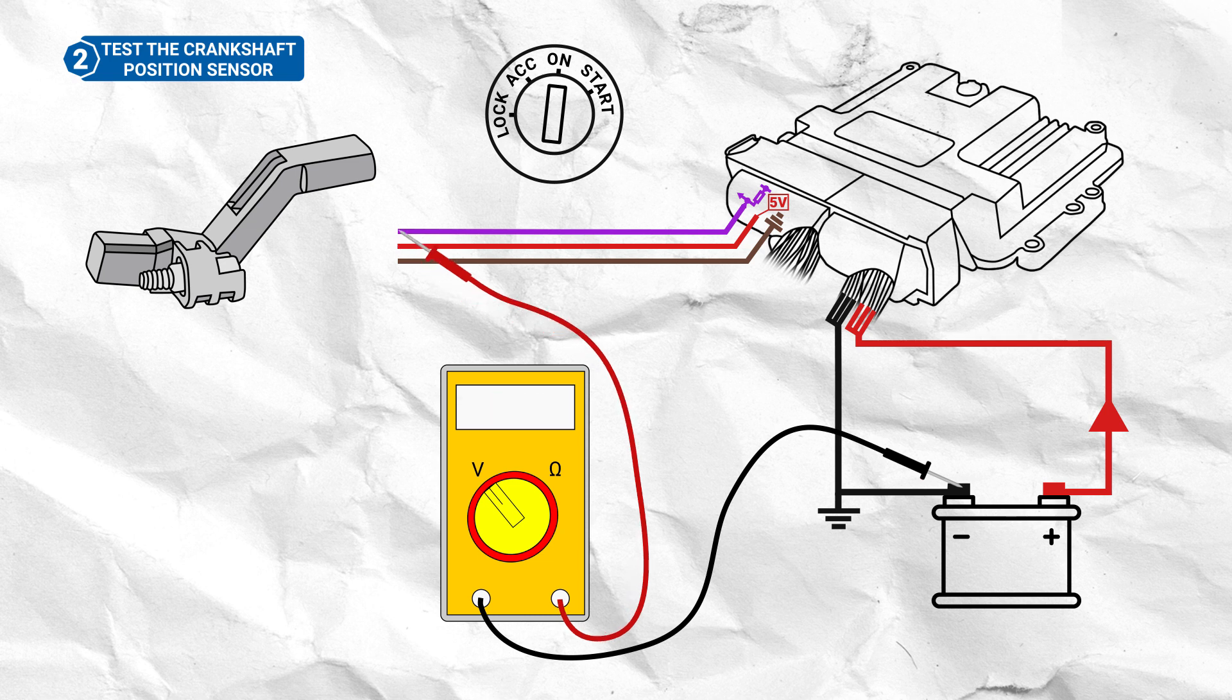Move the red probe to the signal terminal and observe the reading, which should also be 5 volts.